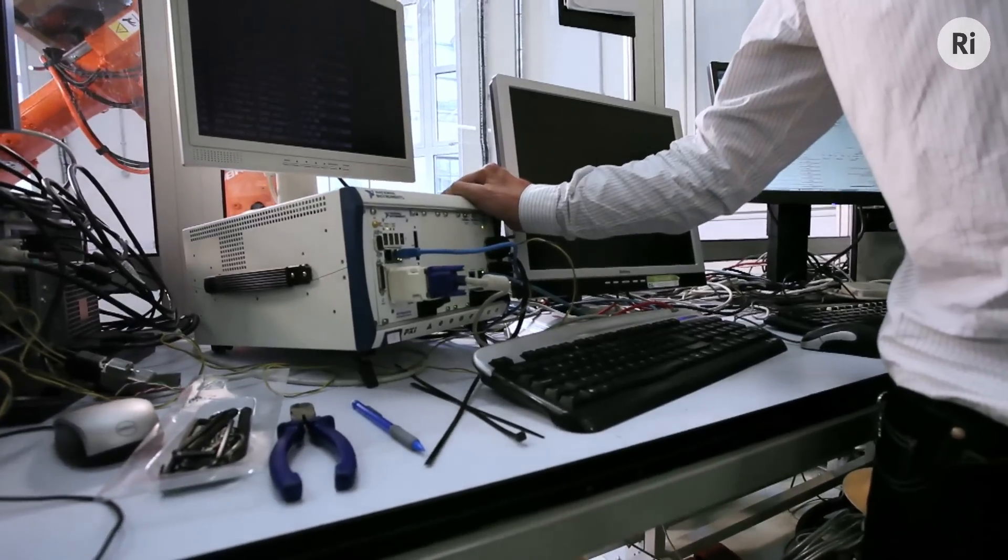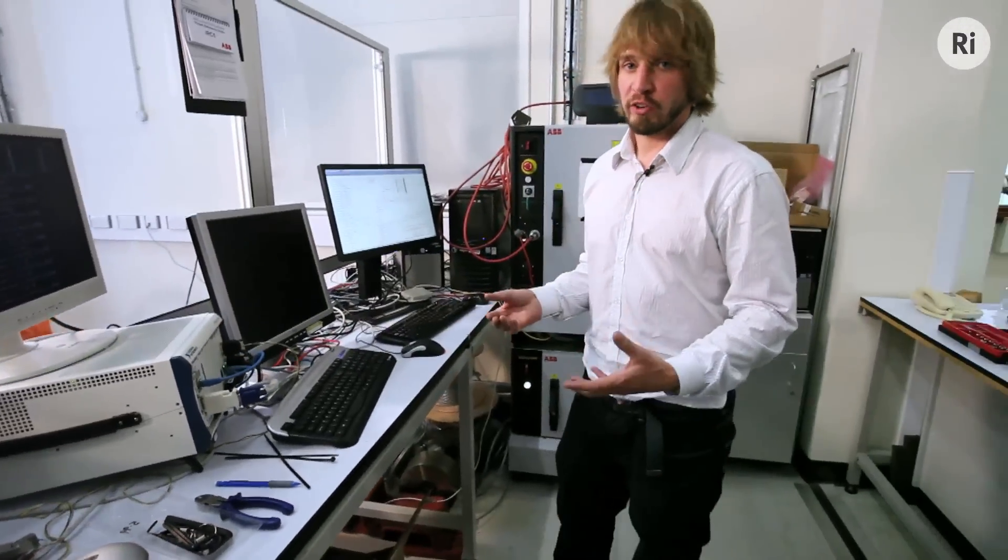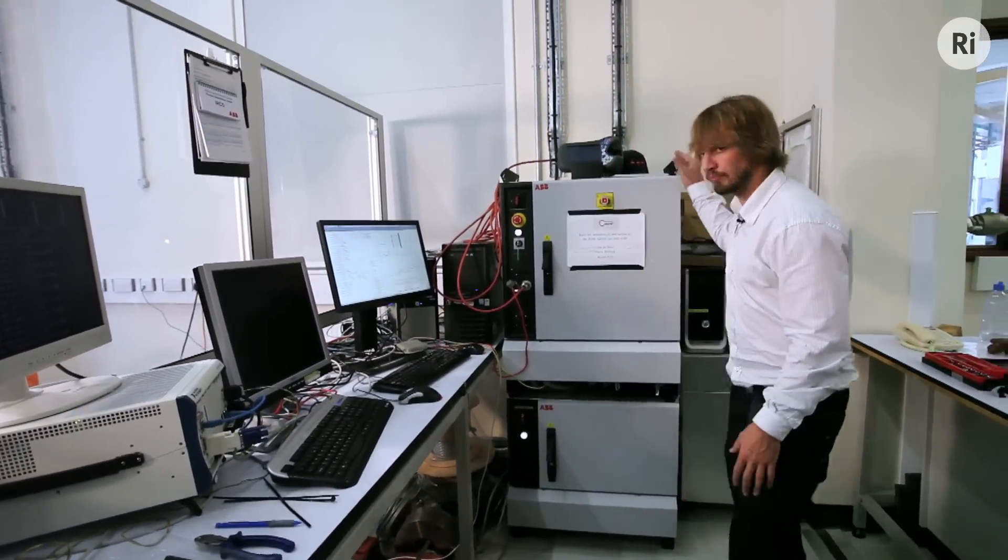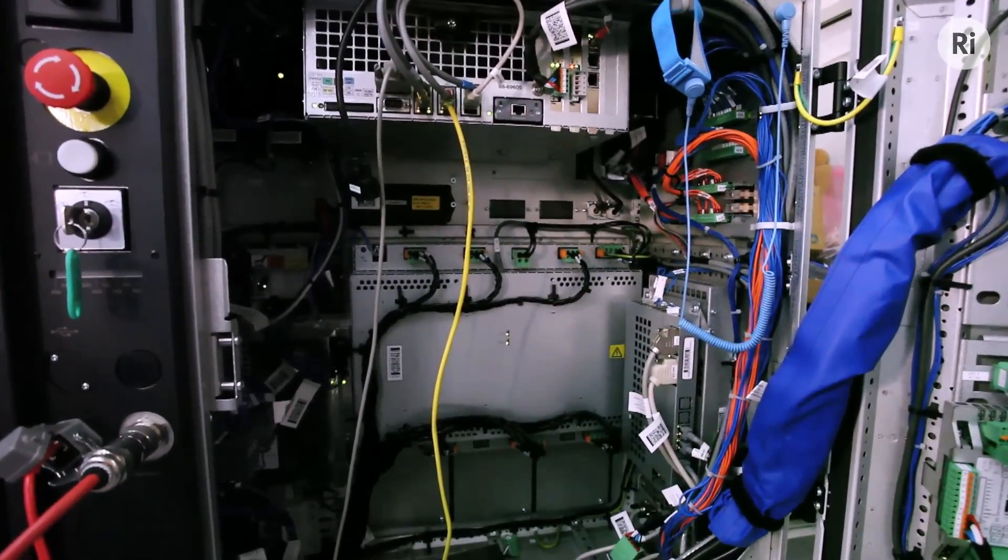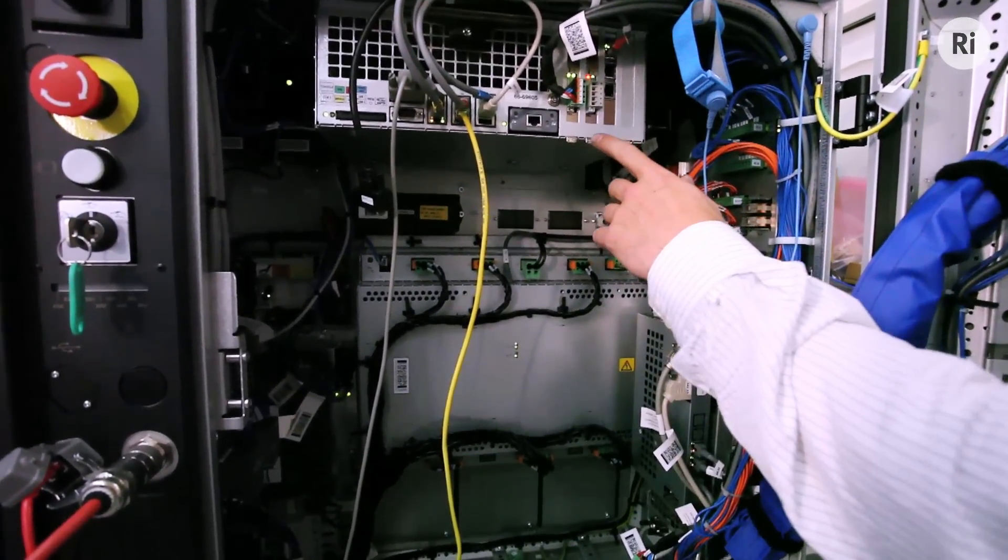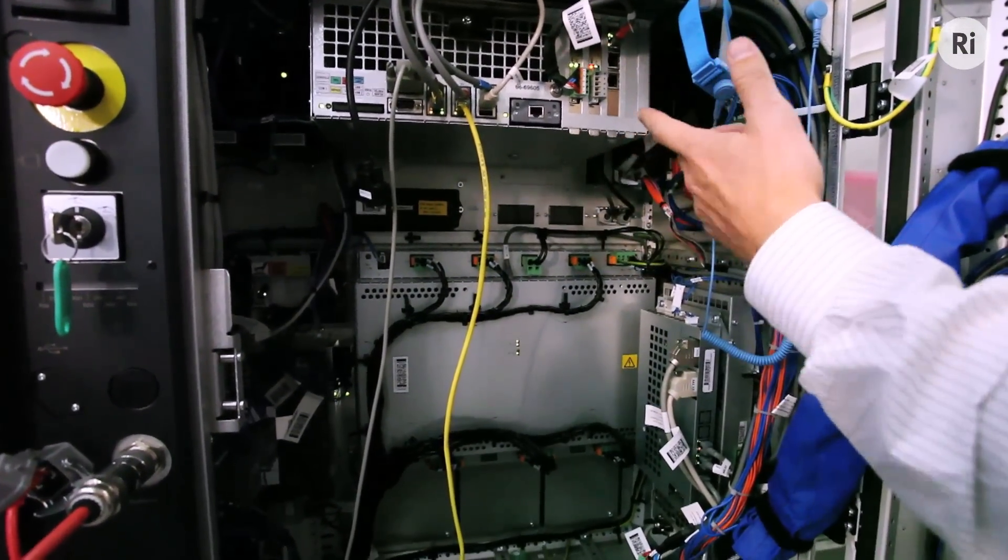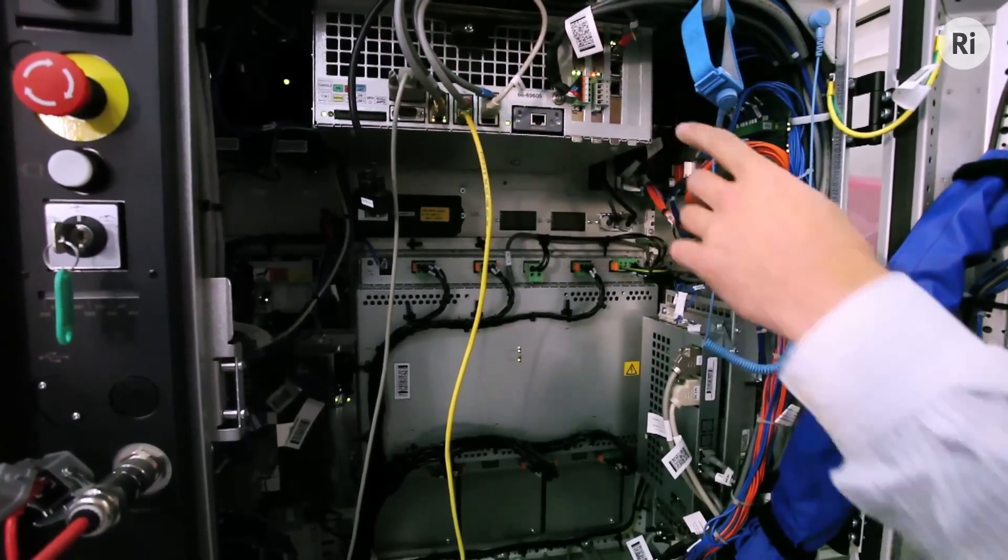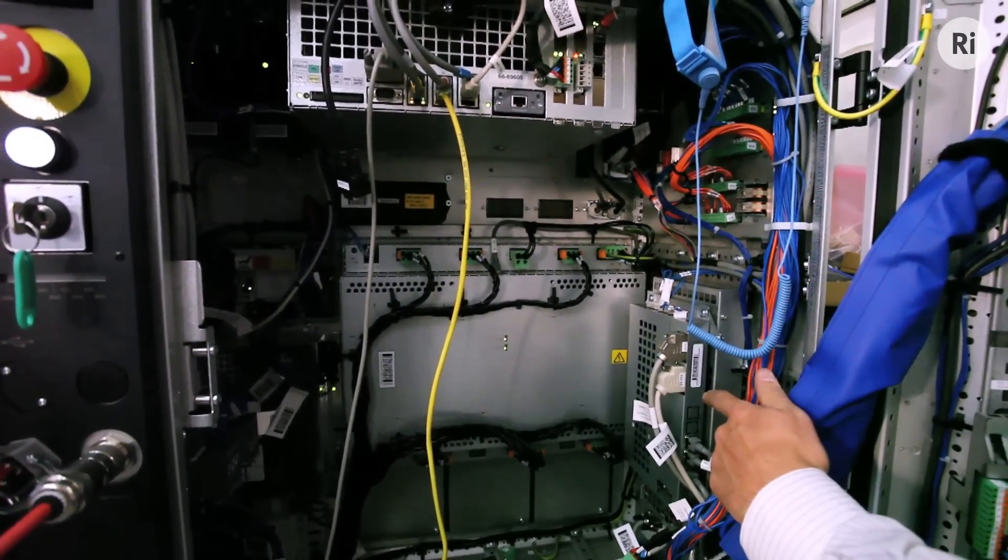And these simulations all run in this box here. Those run in real time, and they pass the position demands to the robot controller. So there are two computers we need to look at in the controller. This is the main computer, and this is used to calculate the motion trajectories for the robots. This computer here is the Axis computer, which is in charge of the motors.